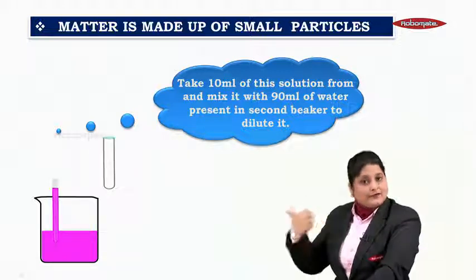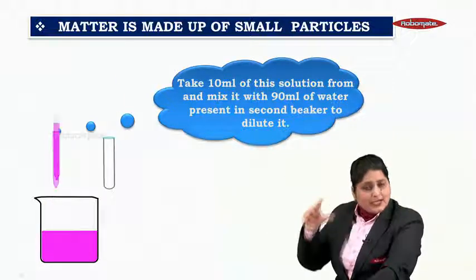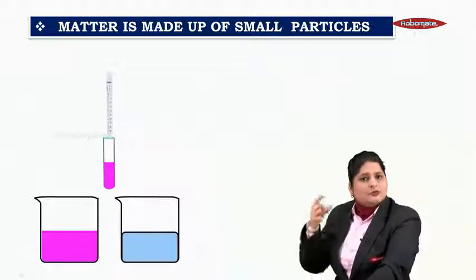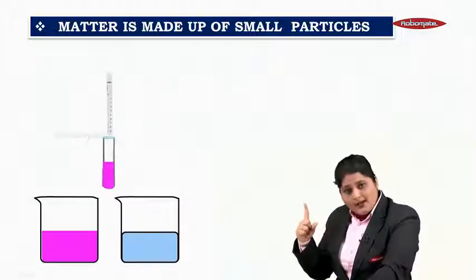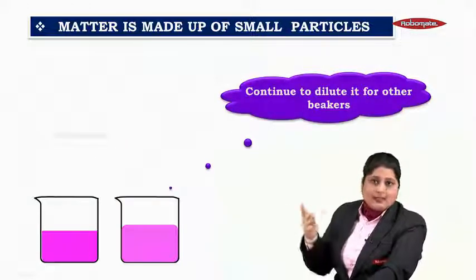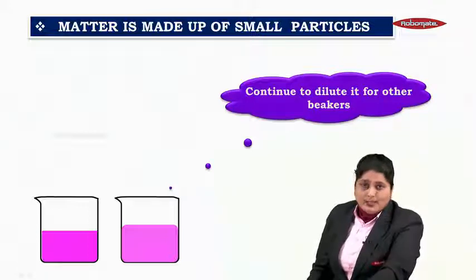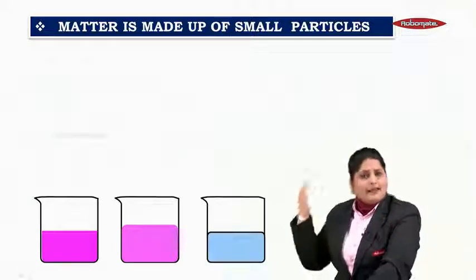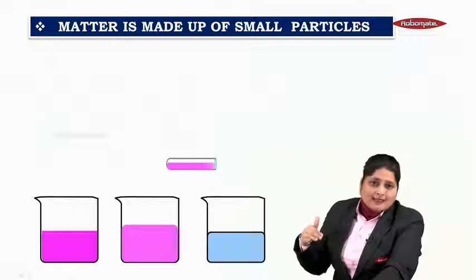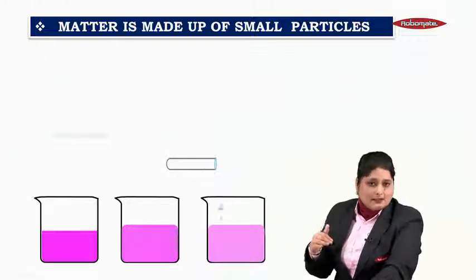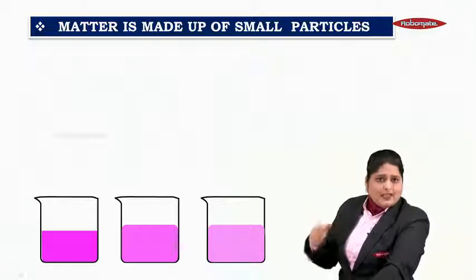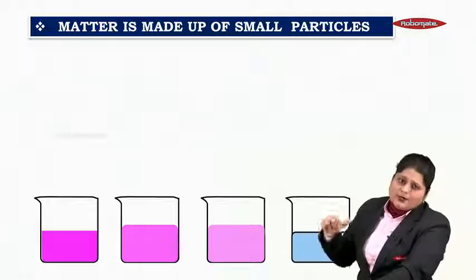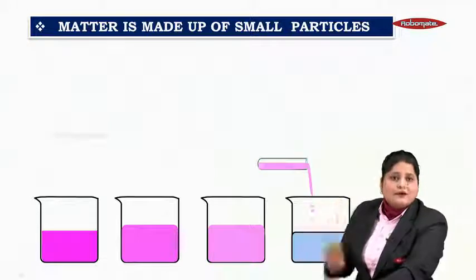From the first beaker, we are taking 10 ml and putting it in a test tube. We are transferring this potassium permanganate solution from beaker number 1 to beaker number 2. Continue to dilute it for other beakers. Take 10 ml from the previous beaker and add the same quantity into the third beaker. Let's do it for the fourth time. From beaker number 3, take 10 ml of solution and transfer it to beaker number 4.